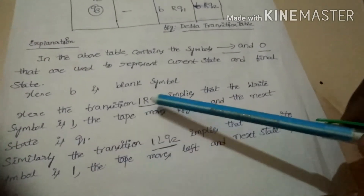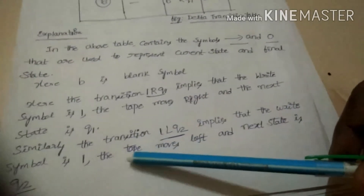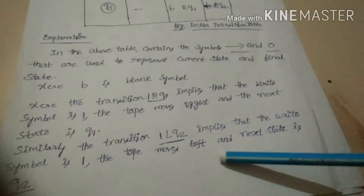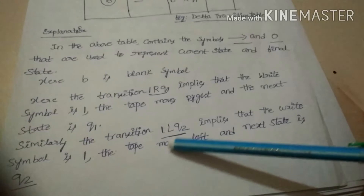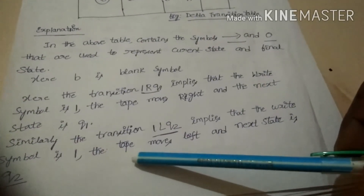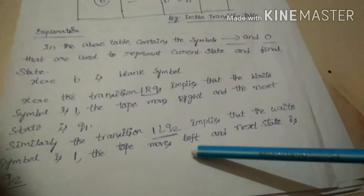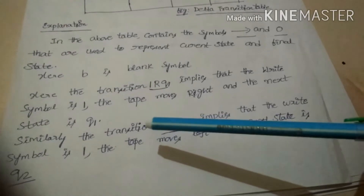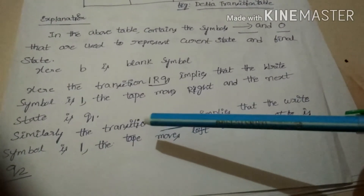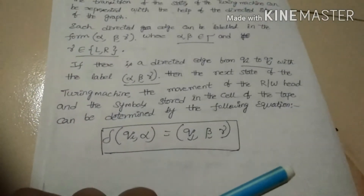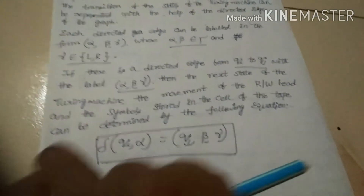Similarly, the transition (1, L, Q2) implies that the written symbol is 1, the tape moves left, and the next state is Q2. This completes the explanation of the transition table and its representation.